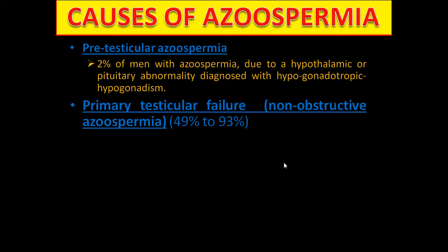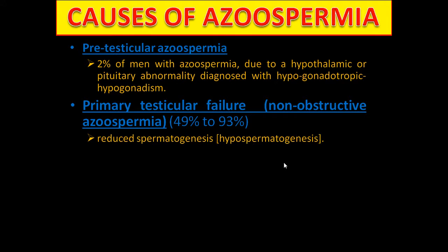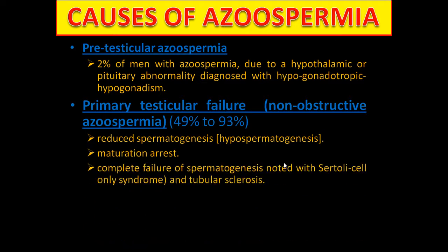Non-obstructive azoospermia accounts for 49–93% of cases. It includes reduced spermatogenesis: hypospermatogenesis, maturation arrest, complete failure of spermatogenesis noted with Sertoli cell-only syndrome and tubular sclerosis.